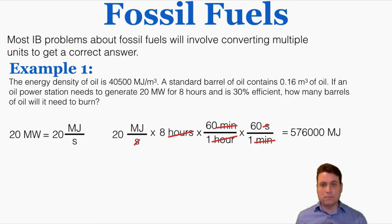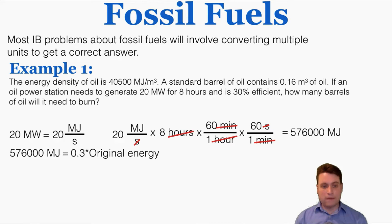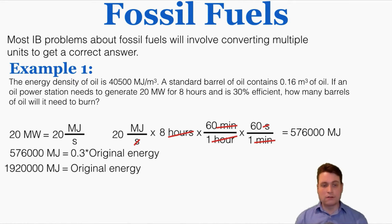But that's the energy out, and we need to know how much energy to put in. Since the plant is 30% efficient, the 576,000 megajoules is 30% of what we need to put in. Writing that as an equation: 576,000 MJ = 0.3 × original energy. Solving for the original energy gives 1,920,000 megajoules — that's how much energy we need to put into the plant to get the useful electrical energy out.